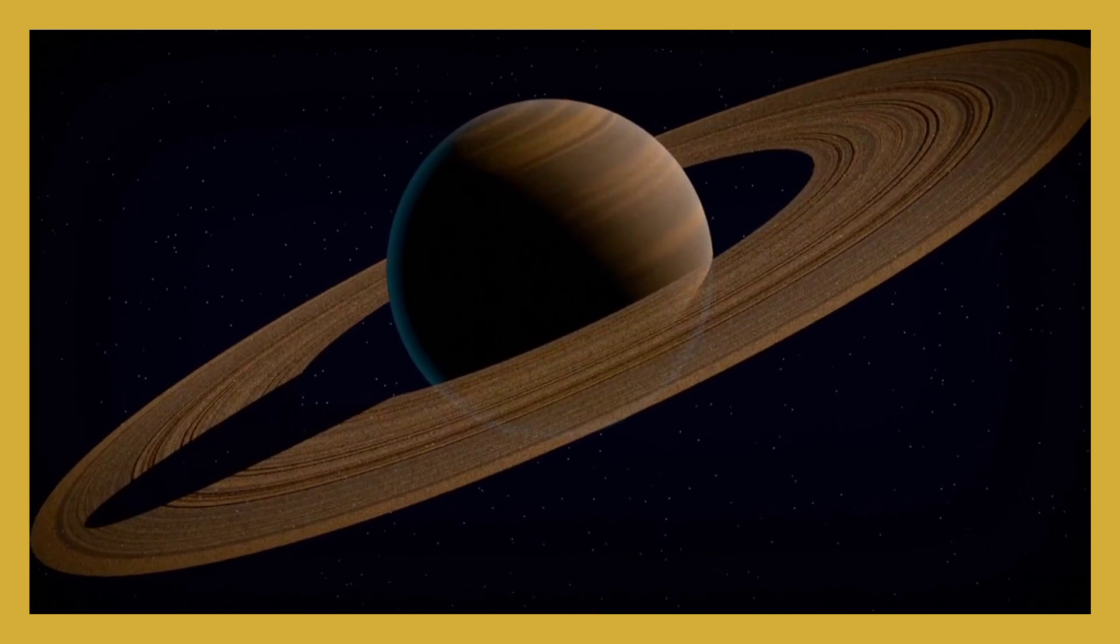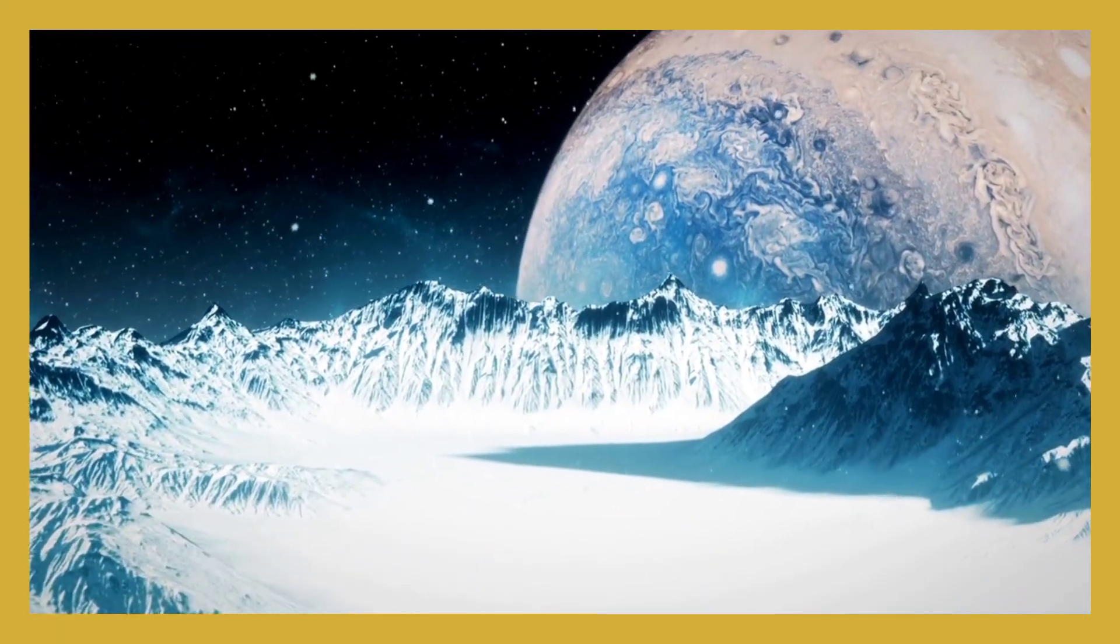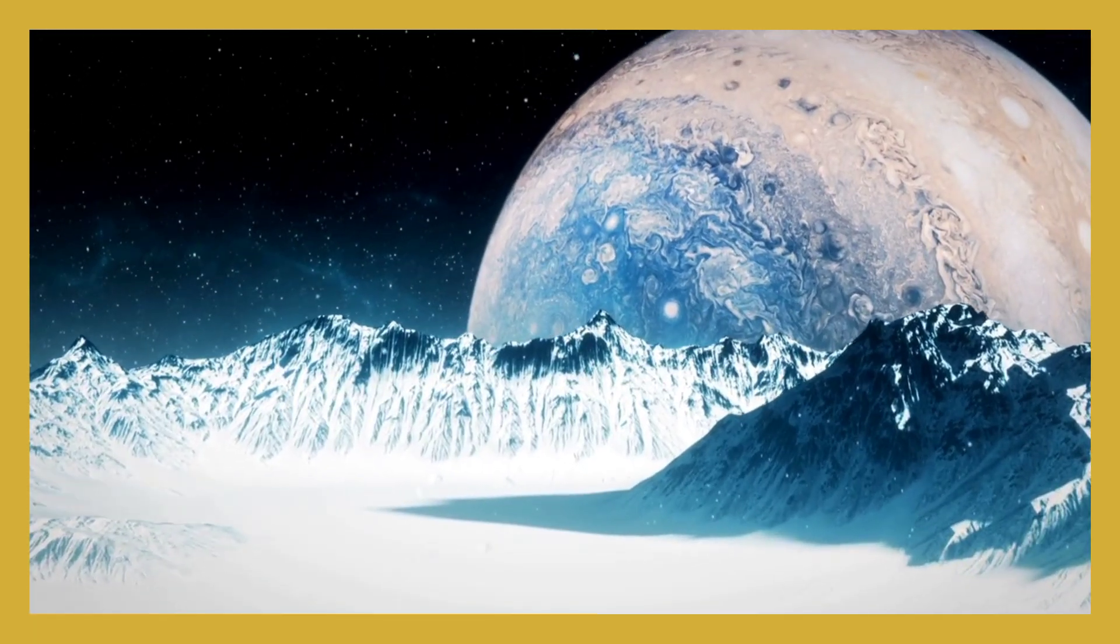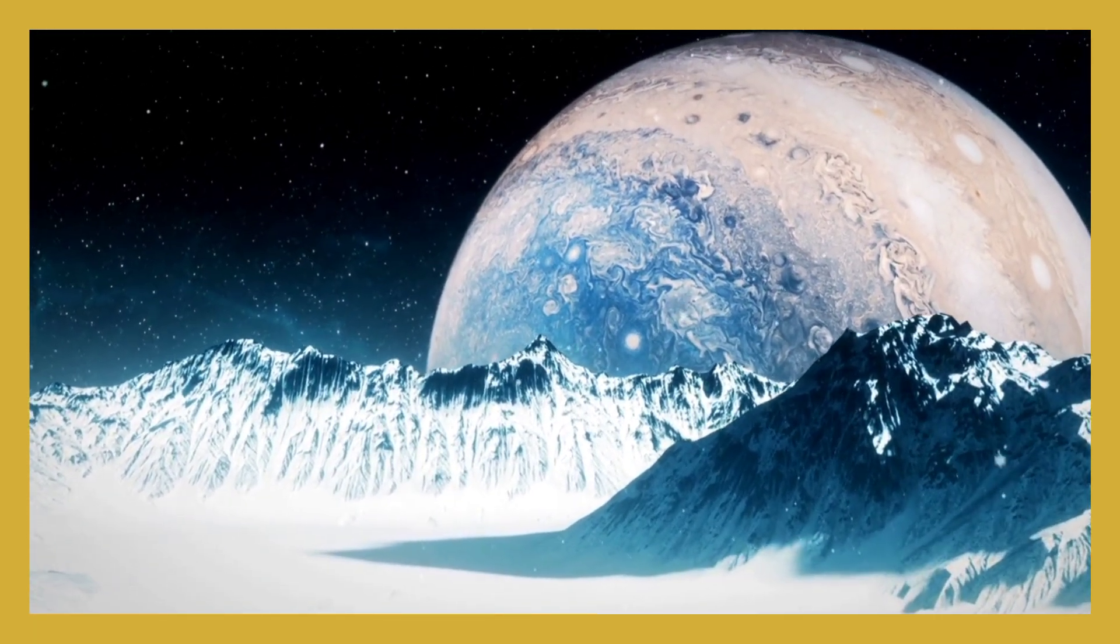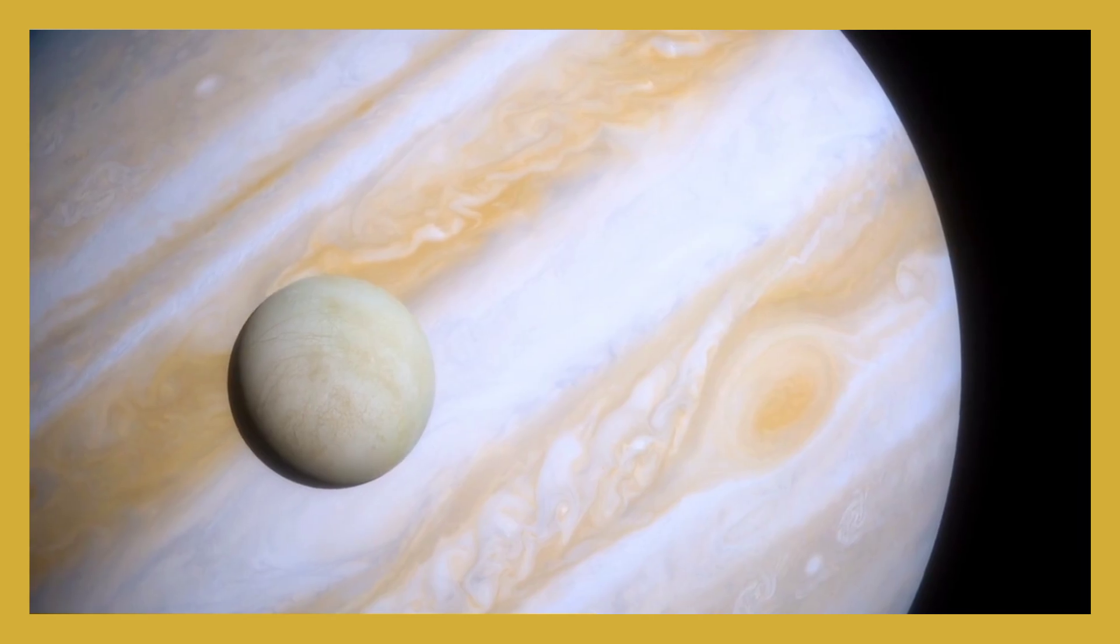Jupiter's giant with swirling bands, with Io's volcanoes and lava lands. Europa has ice, and Ganymede's big. Callisto's a moon with many craters so big.